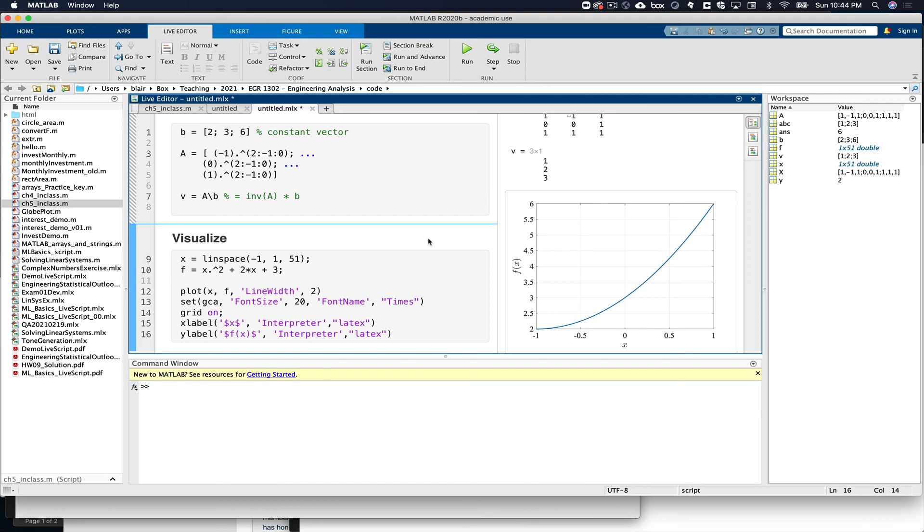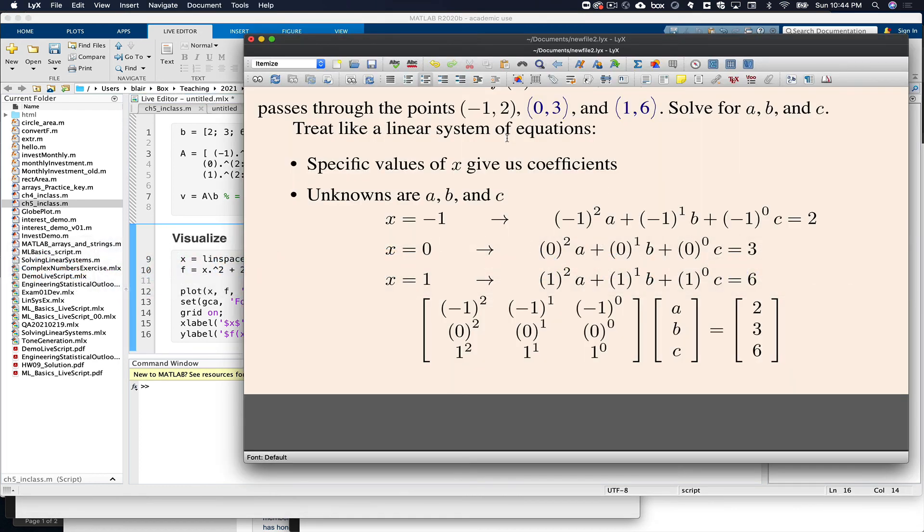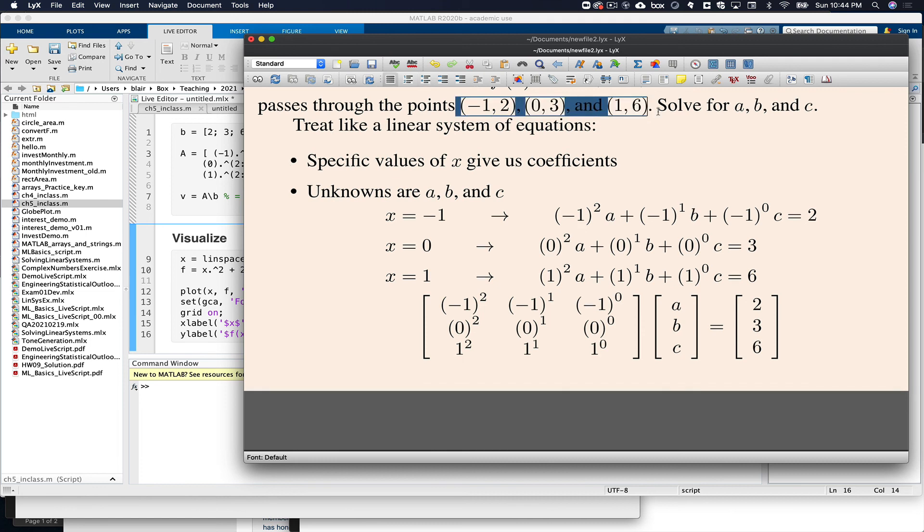That satisfies the initial problem statement. So the data, the function passes through those points. So that you can see what happens.